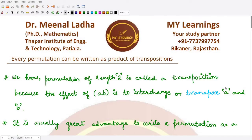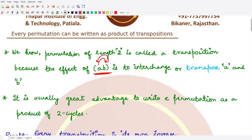Welcome to this video. We'll be talking about various results based on transpositions. Whenever we have a two-cycle, we call it a transposition, because it transposes or interchanges one element with another. The effect of a transposition is to interchange two elements: a is mapped to b and b is mapped to a.